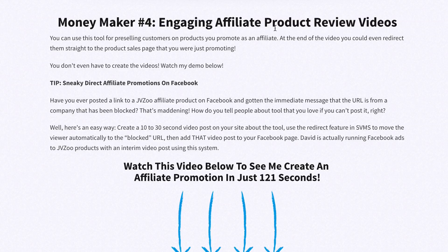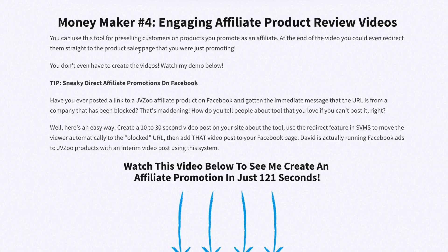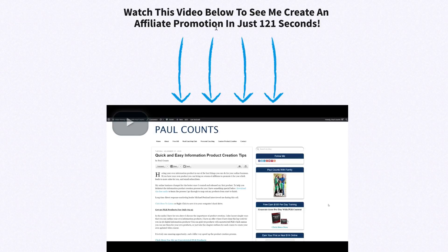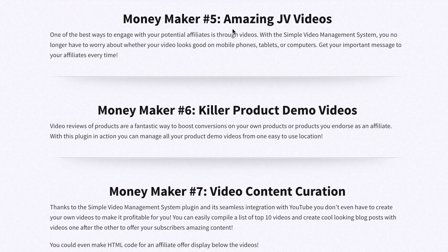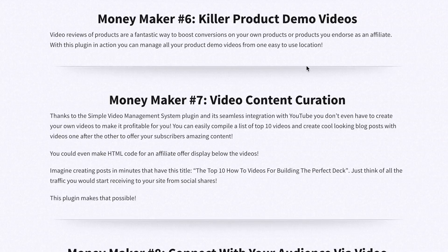Number four, engaging affiliate product review videos. You can use this tool for pre-selling customers on products you promote as an affiliate. At the end of the video, you can even redirect them straight to the product sales page you were just promoting. You can watch the video on the sales page to see how David creates an affiliate promotion in just 121 seconds. Number five, amazing JV videos. You no longer have to worry about whether your video looks good on mobile phones, tablets, or computers.